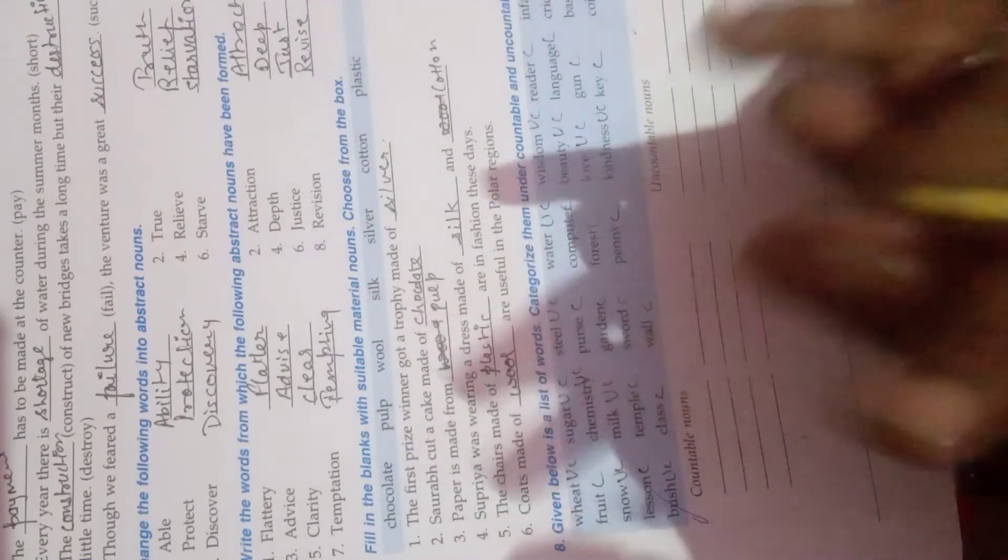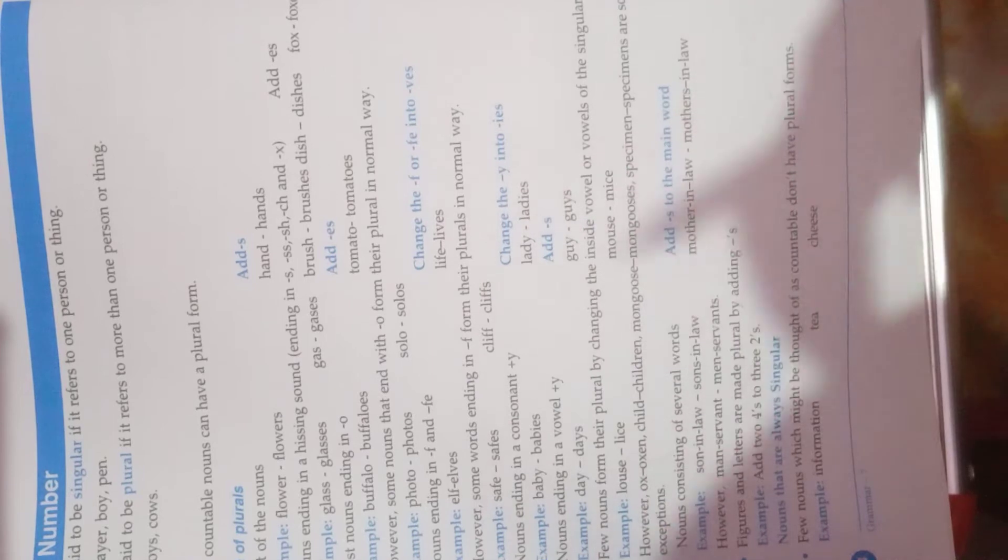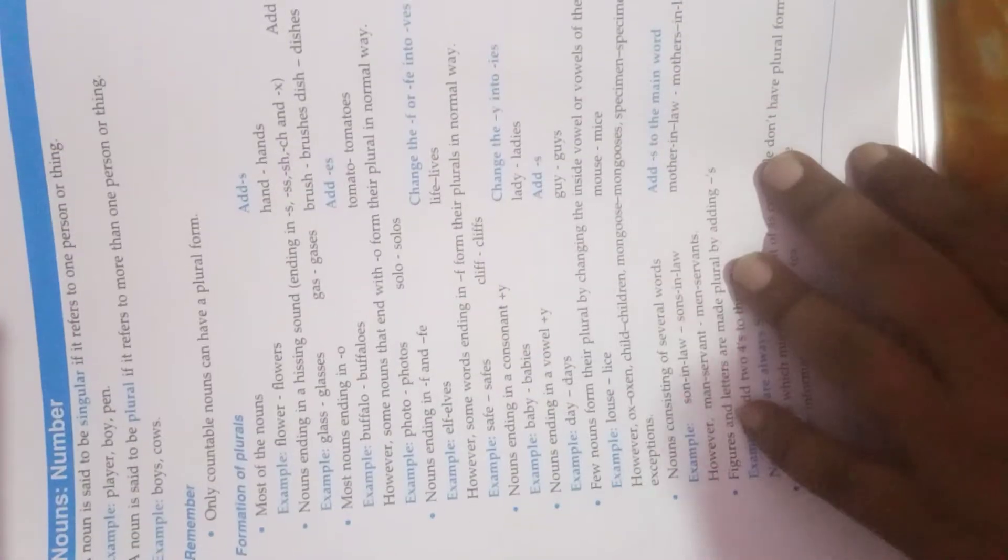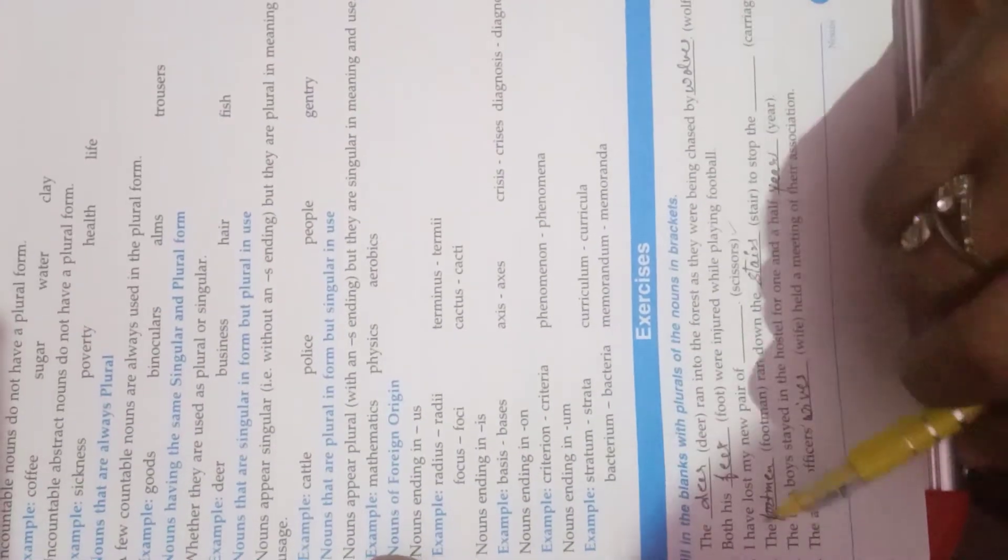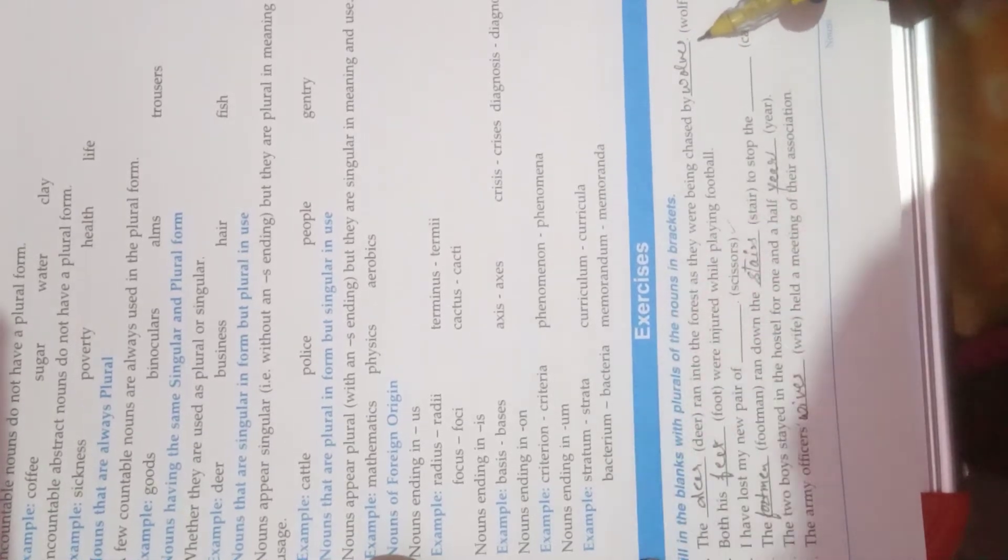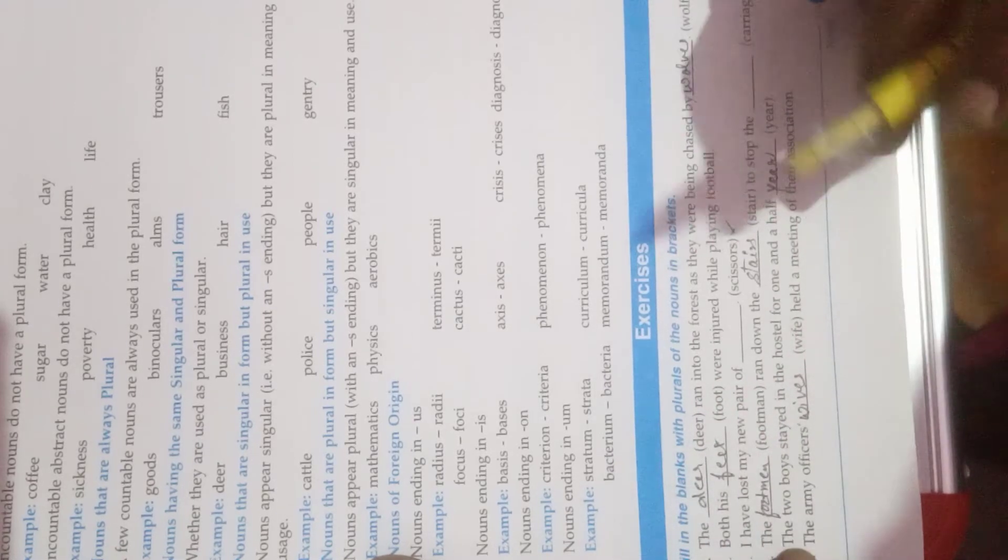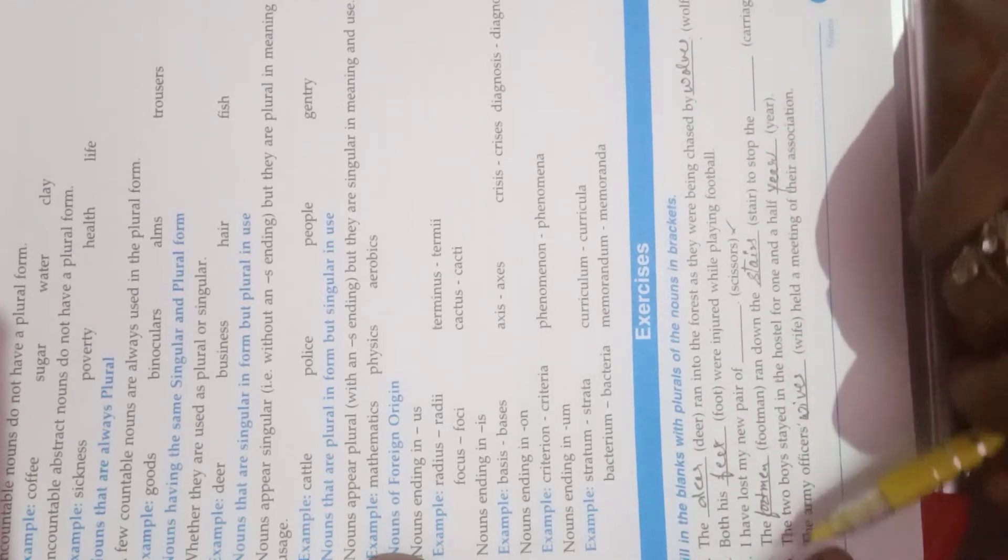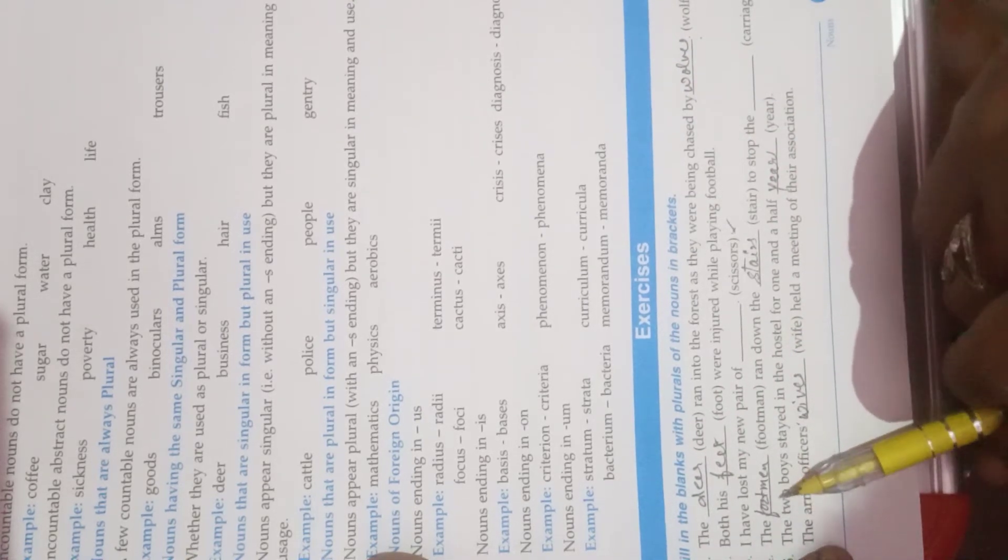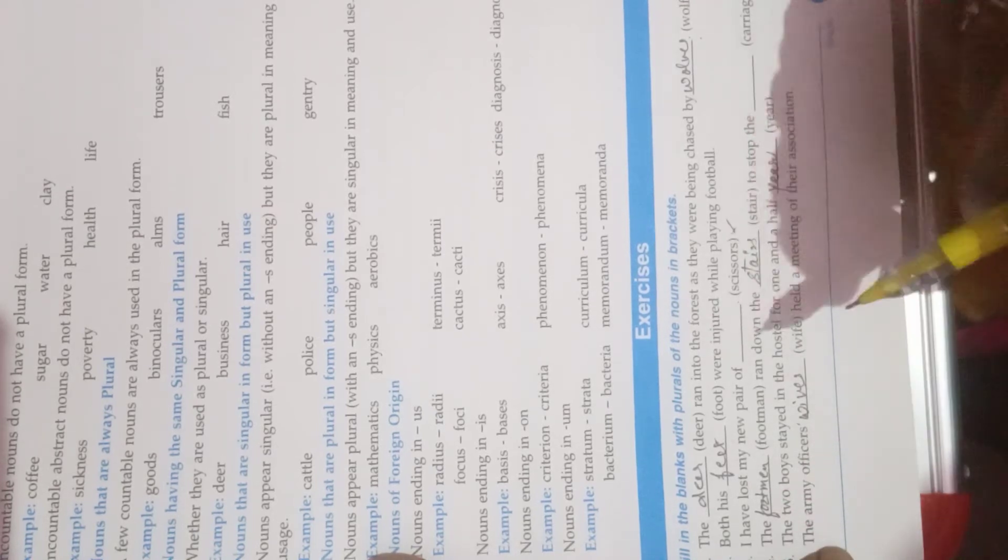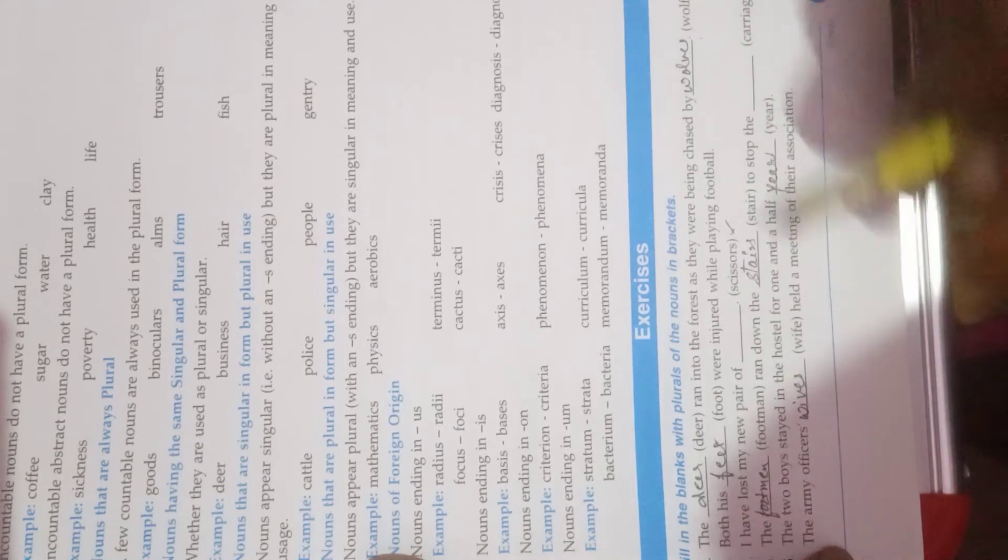So kids, this is all for today in this video. In the next video I will explain exercise number, I think it is not very much difficult for you. The first answer is deer and the second part is wolves. Second answer is feet. Third answer is scissors. Fourth is footmen, M-E-N. Fifth is carriages.